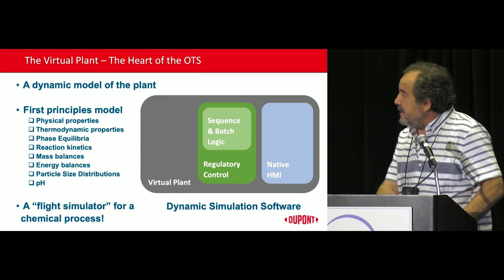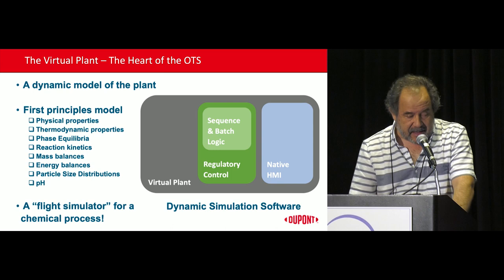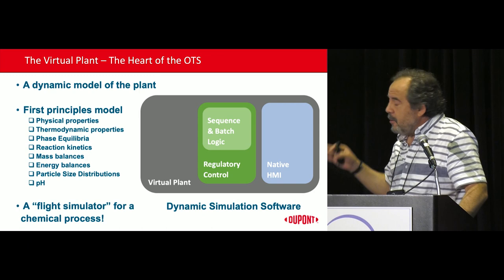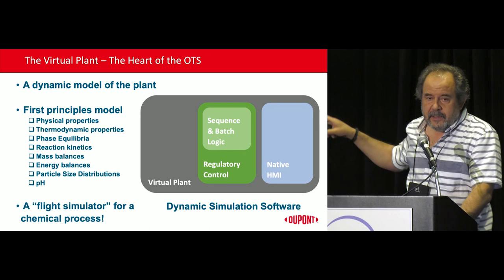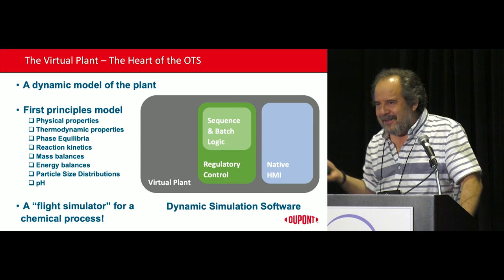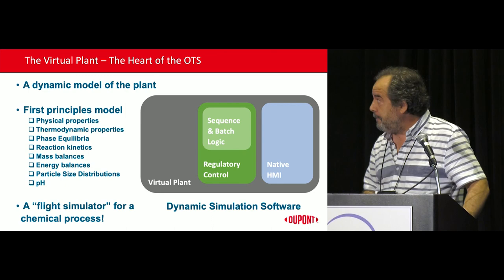At the heart of an OTS is the dynamic model of the plant. What we do at DuPont, we go with first principles models. We do all the mass and energy balances, the thermodynamics, particle size distributions if needed, the pH if needed, all the phase equilibrium — everything is in there. That's represented by the gray area in the diagram. And on top of that, in the software, we put the regulatory control that is needed to run the plant, any batch or sequences that may be needed. And of course, the software has its own HMI. In a sense, at this point, you already have a training system. But the problem is that the native HMI may not look anything like what the DCS has. But if you want to teach concepts at this point, you already have the tool that you need.